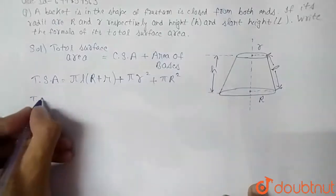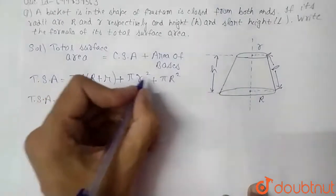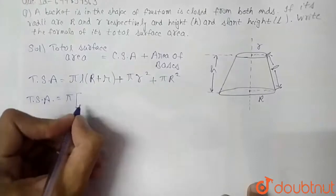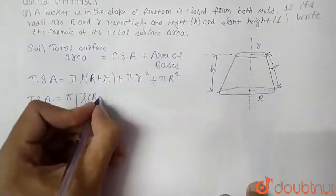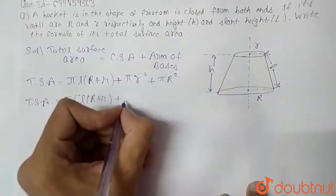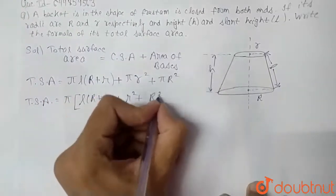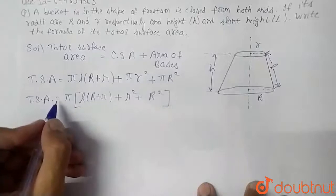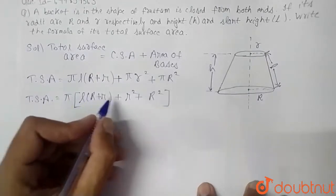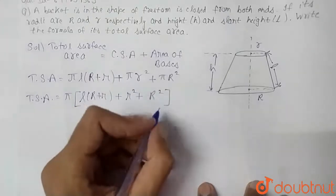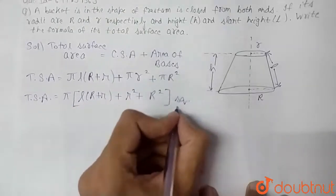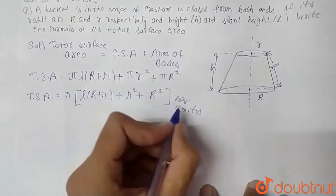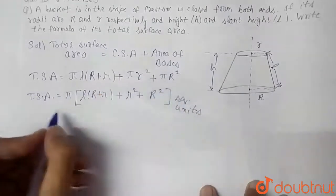Taking π common from all three terms, the total surface area equals π times the quantity: L(capital R + small r) + r² + R². So the total surface area of this frustum is equal to π [ L(R + r) + r² + R² ], with units of square units. This is the required answer.